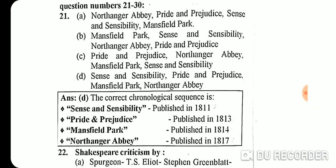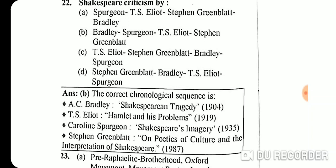Questions 21-23 are chronological sequence questions. The correct chronological sequence for Jane Austen's works is: Sense and Sensibility (1811), Pride and Prejudice (1813), Mansfield Park (1814), and Northanger Abbey (1817). For Shakespeare criticism: A.C. Bradley's 'Shakespearean Tragedy' (1904), T.S. Eliot's 'Hamlet and His Problems' (1919), Caroline Spurgeon's 'Shakespeare's Imagery' (1935).